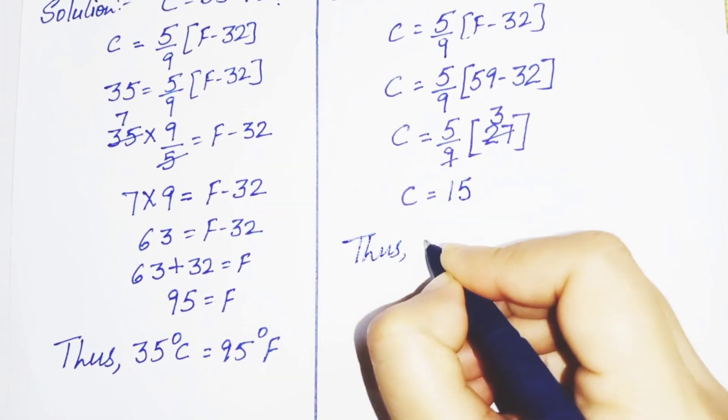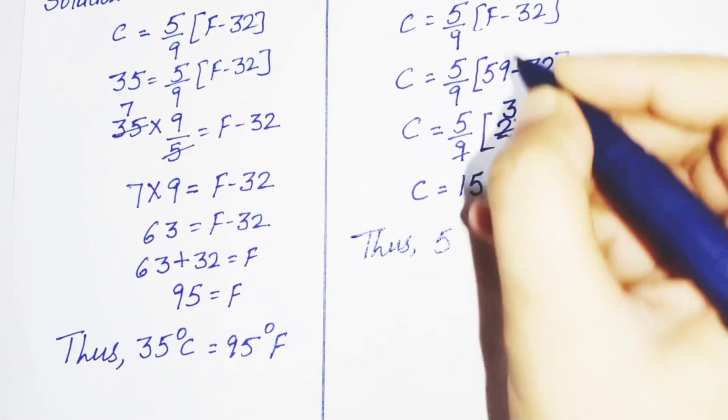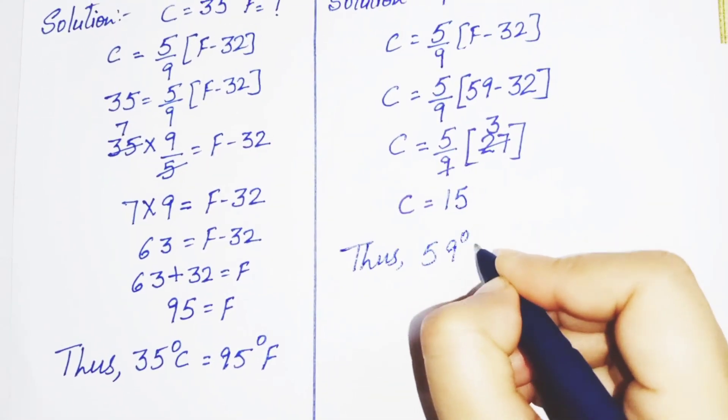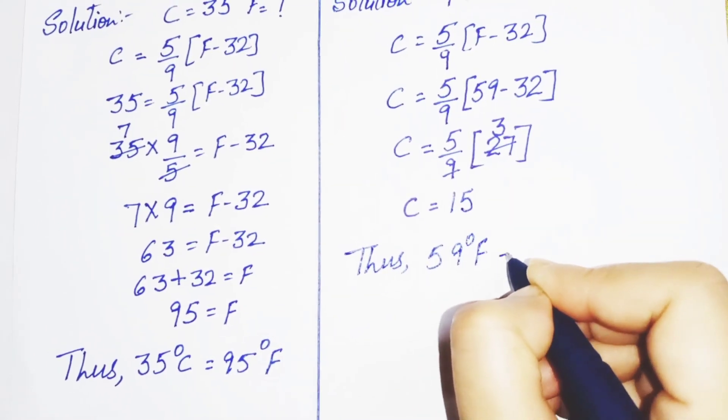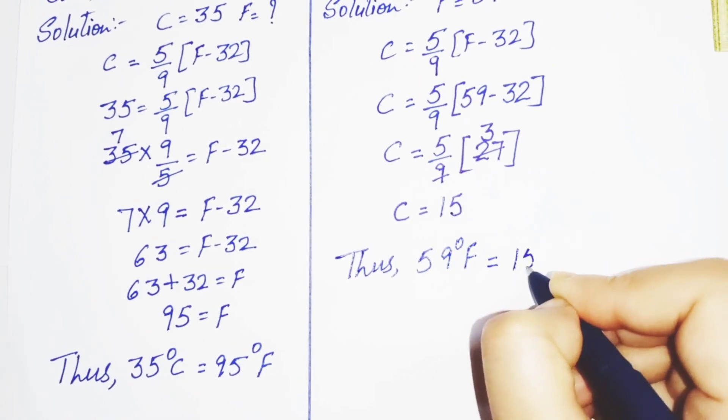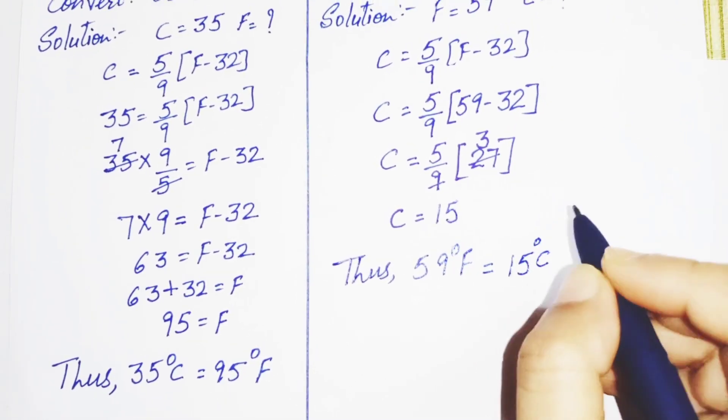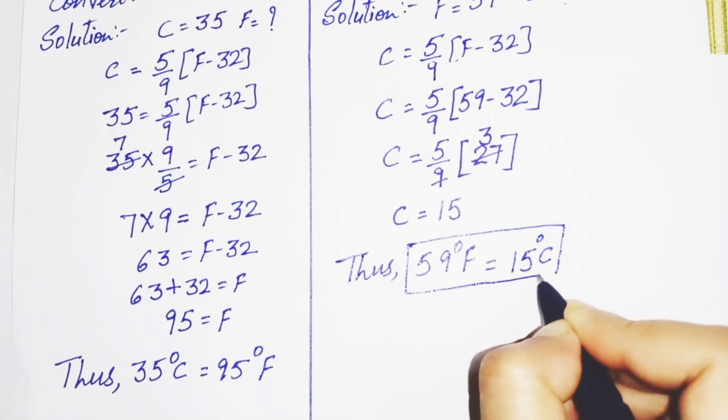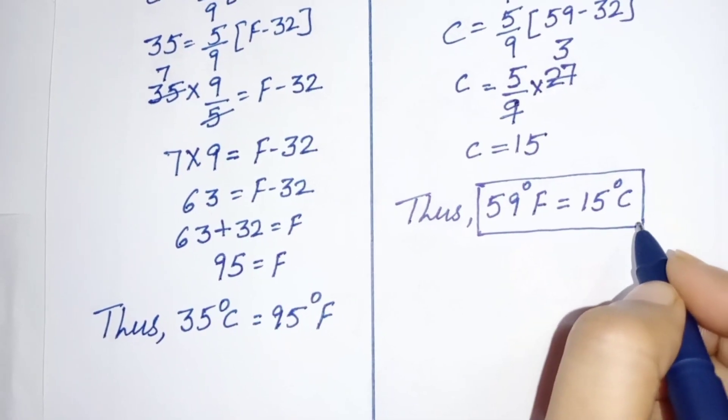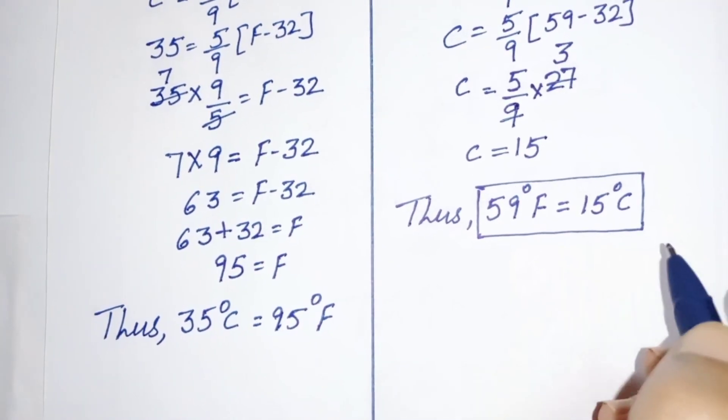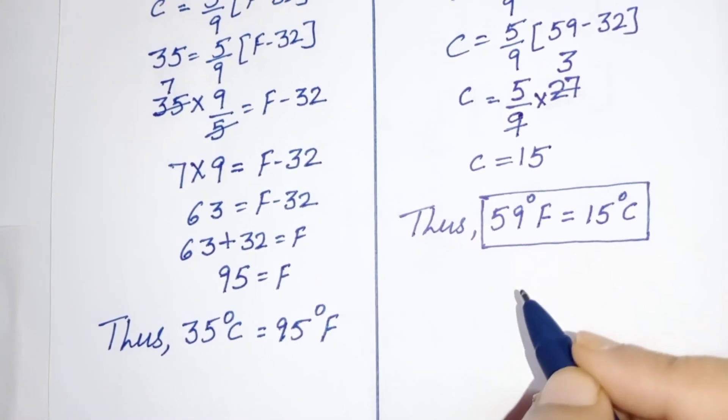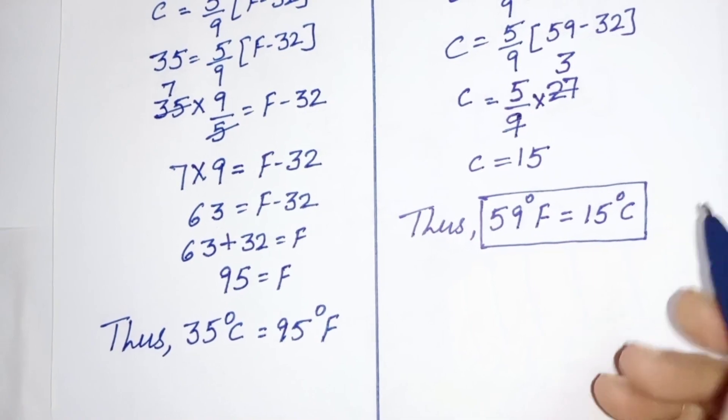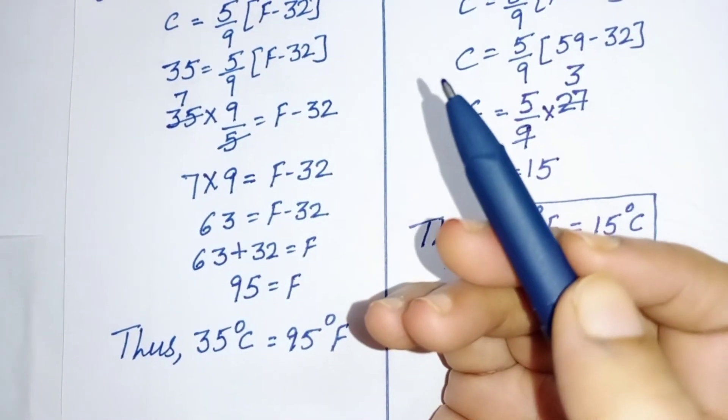Thus 59 degree Fahrenheit is equal to 15 degree Celsius. In this way you can convert Celsius temperature to Fahrenheit or vice versa.